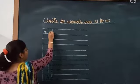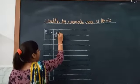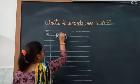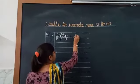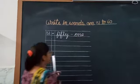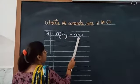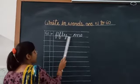51. What is the spelling of 50? F-I-F-T-Y. 51. What is the spelling of 1? O-N-E, 1. F-I-F-T-Y, 50, O-N-E, 1. 51.